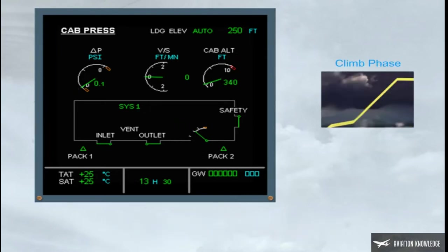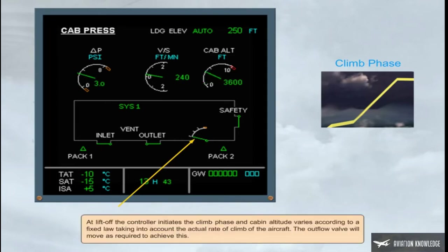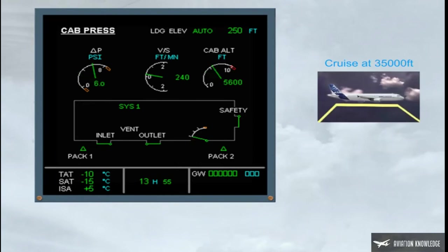At lift-off, the controller initiates the climb phase and cabin altitude varies according to a fixed law, taking into account the actual rate of climb of the aircraft. The outflow valve will move as required to achieve this. Once established in cruise, the cabin altitude and differential pressure will remain steady. The outflow valve will move as required to maintain the cabin altitude.